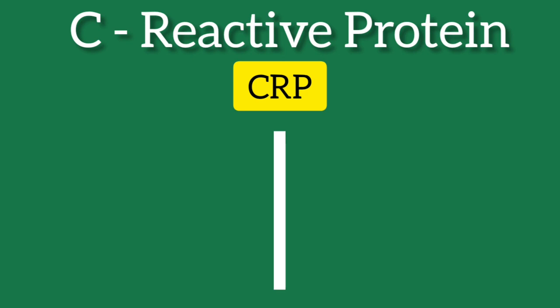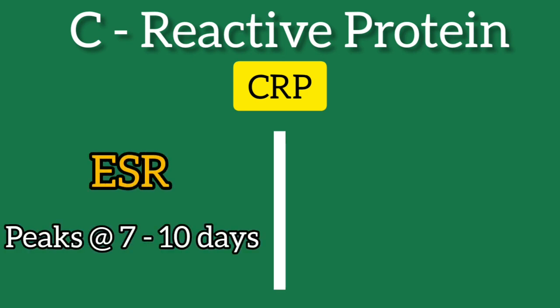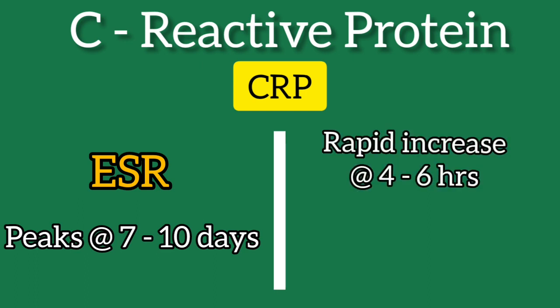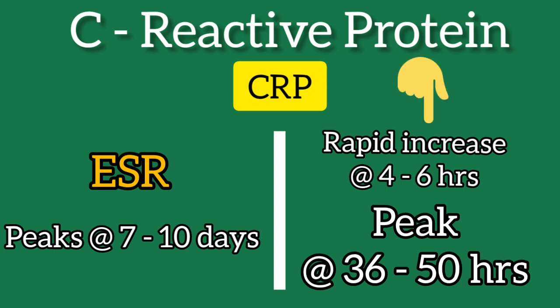Compared to the erythrocyte sedimentation rate, the ESR, the levels of CRP rise and fall rapidly with the onset and removal of the inflammatory stimulus — meaning CRP rises rapidly with the onset and falls rapidly with the removal of the inflammatory stimulus.